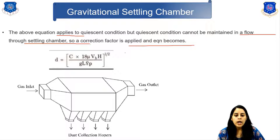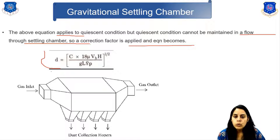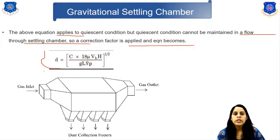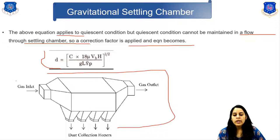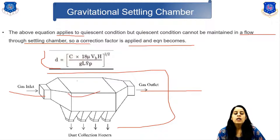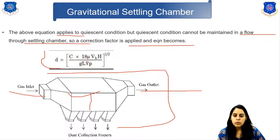The above equation applies to quiescent conditions, but quiescent conditions cannot be maintained in the flow towards the settling chamber, so a correction factor is applied. The corrected equation is: D equals the square root of C times 18 mu times VH times H, divided by g times L times rho_P. In this chamber, gas enters as inlet, heavier particles settle down into the dust collection hopper, and clean gas exits as outlet.